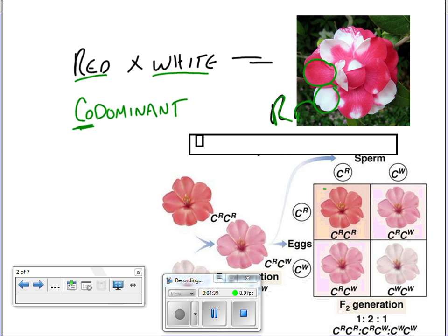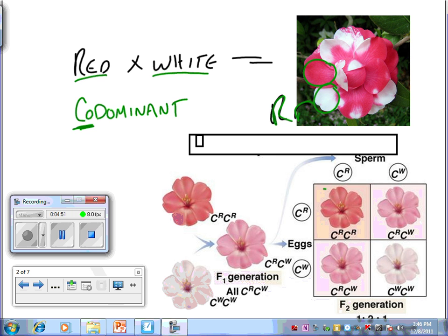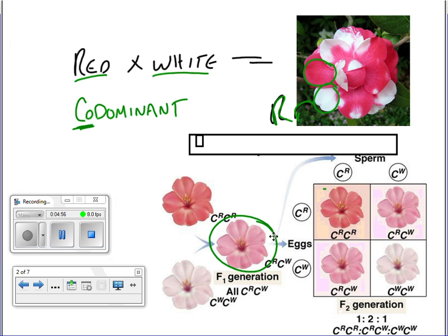The way I like to remember it is co, like cooperating. If you're cooperating with somebody, both of you are giving information to the conversation, just like both of these are contributing to the color of their offspring. You see red and white in the offspring. The difference here between codominant and the one below, which is incomplete dominance, we don't see both red and white in the heterozygote. We see a blending between the two, and that is incomplete dominance.